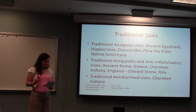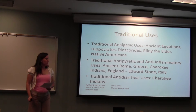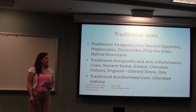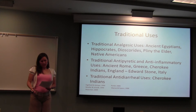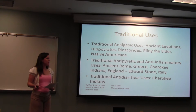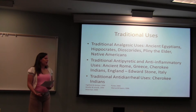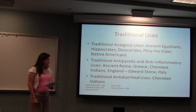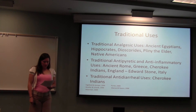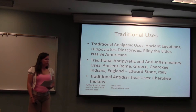In 1757, Edward Stone went looking for a replacement for quinine. He tried the white willow bark and it was just as bitter as quinine, so he started trying to analyze it and see what was in it, and found that it had a lot of anti-inflammatory effects. Then in 1829, Leroux, a French chemist, identified salicin.